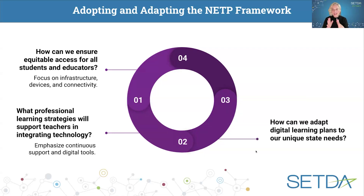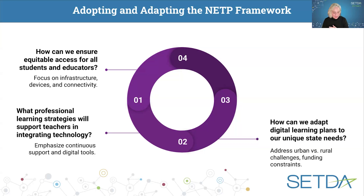How can we adapt our digital learning plans to our unique state needs? You want to address urban versus rural challenges and funding constraints. State boards lead the way because they're setting policy and creating governance structures, and hopefully ensuring that resources are allocated effectively. You can also advocate for sustained funding and establish professional learning programs that help educators integrate technology in meaningful ways.